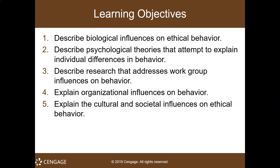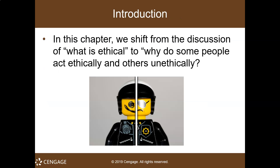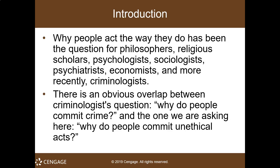In this chapter, we're going to shift from the discussion of what is ethical to why some people act ethically and others unethically. Why people act the way they do has really been the question for philosophers, religious scholars, psychologists, sociologists, psychiatrists, economists, and more recently criminologists — because there is an obvious overlap between the criminologist question of why people commit crime and why people commit unethical acts.